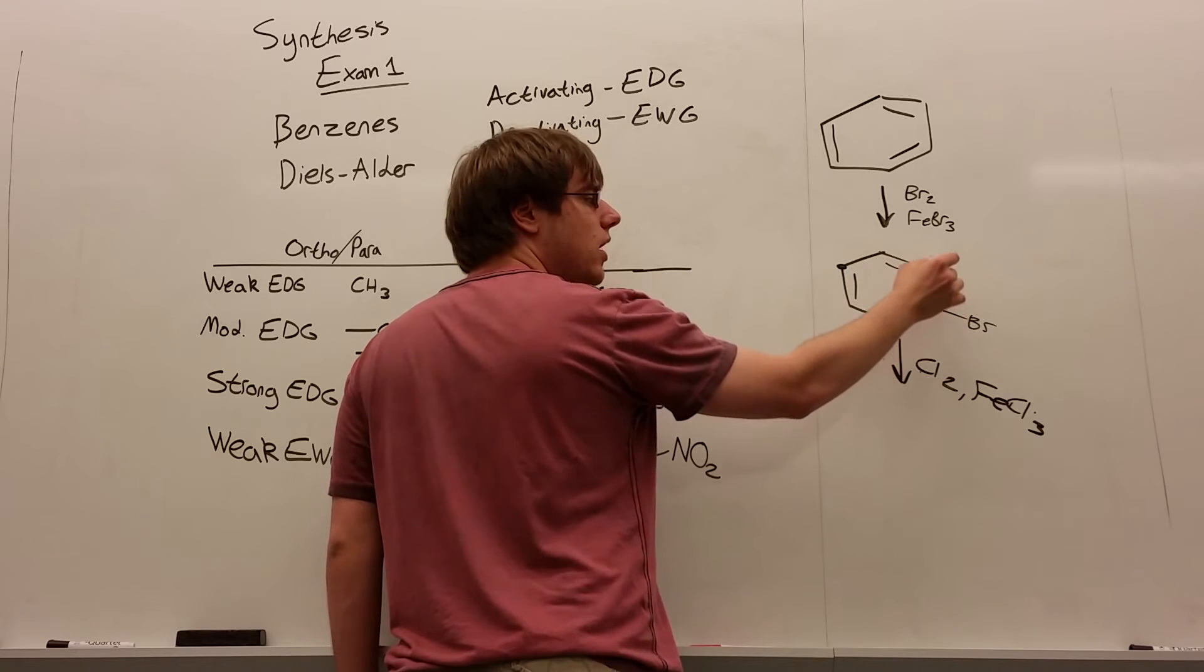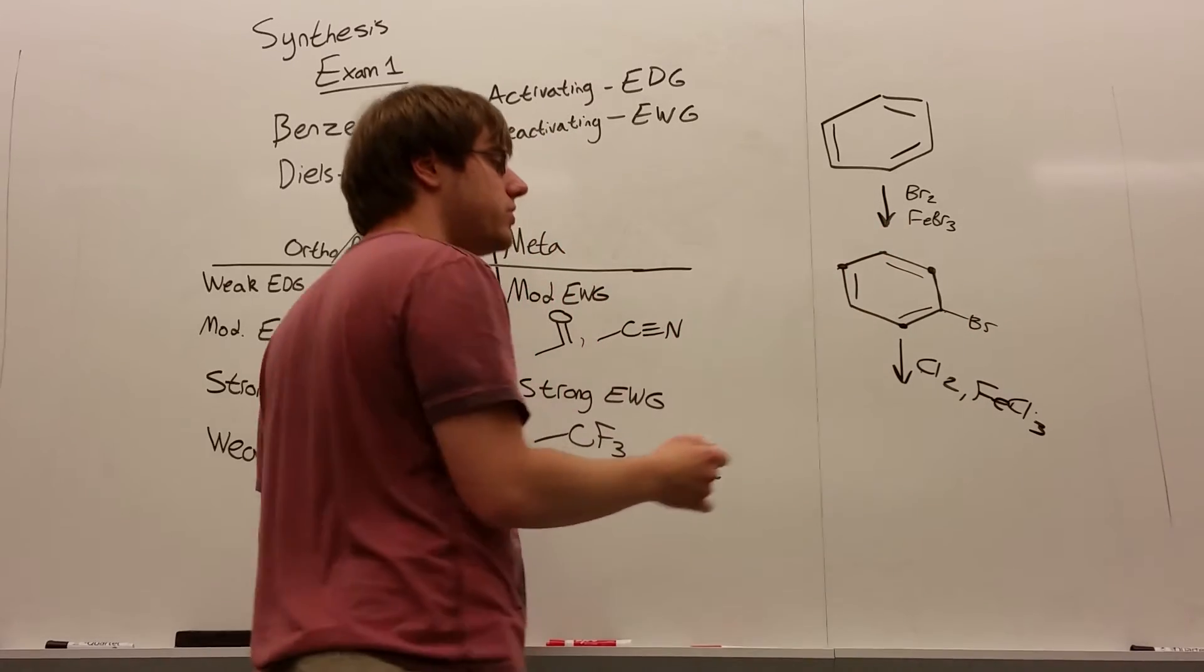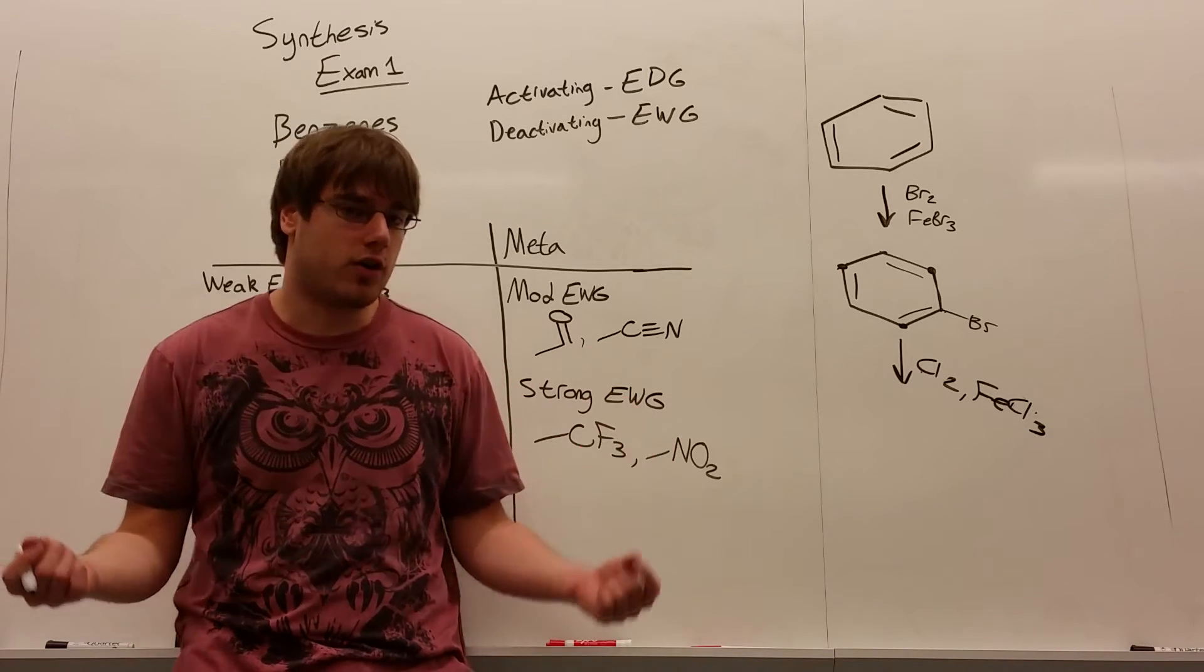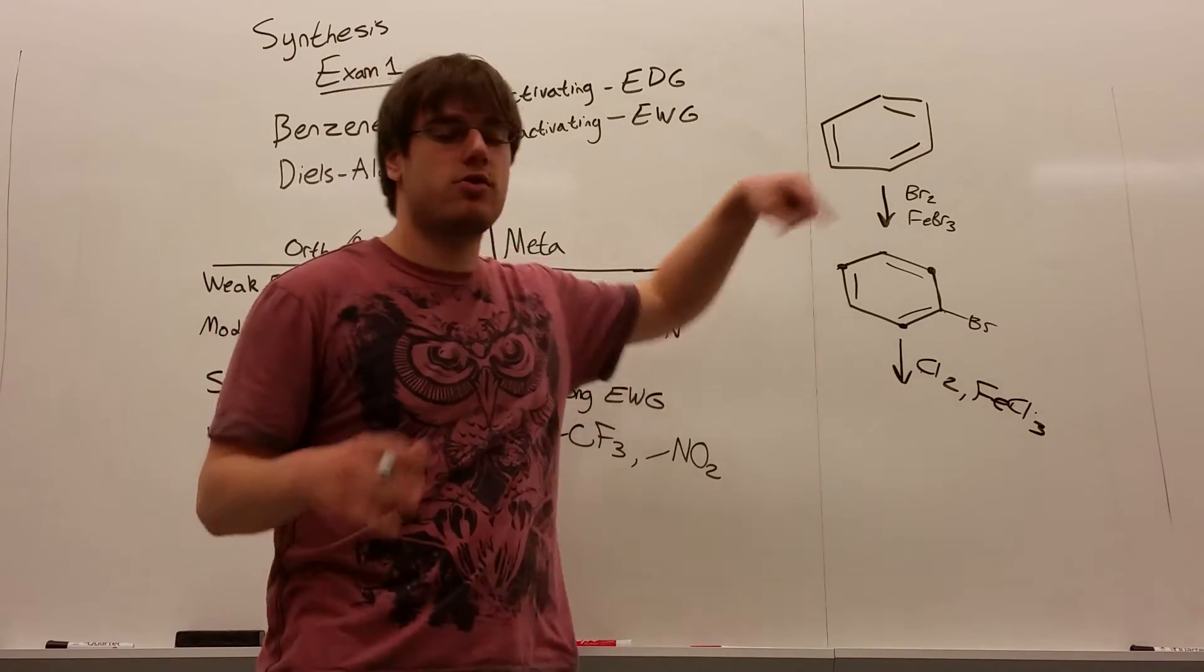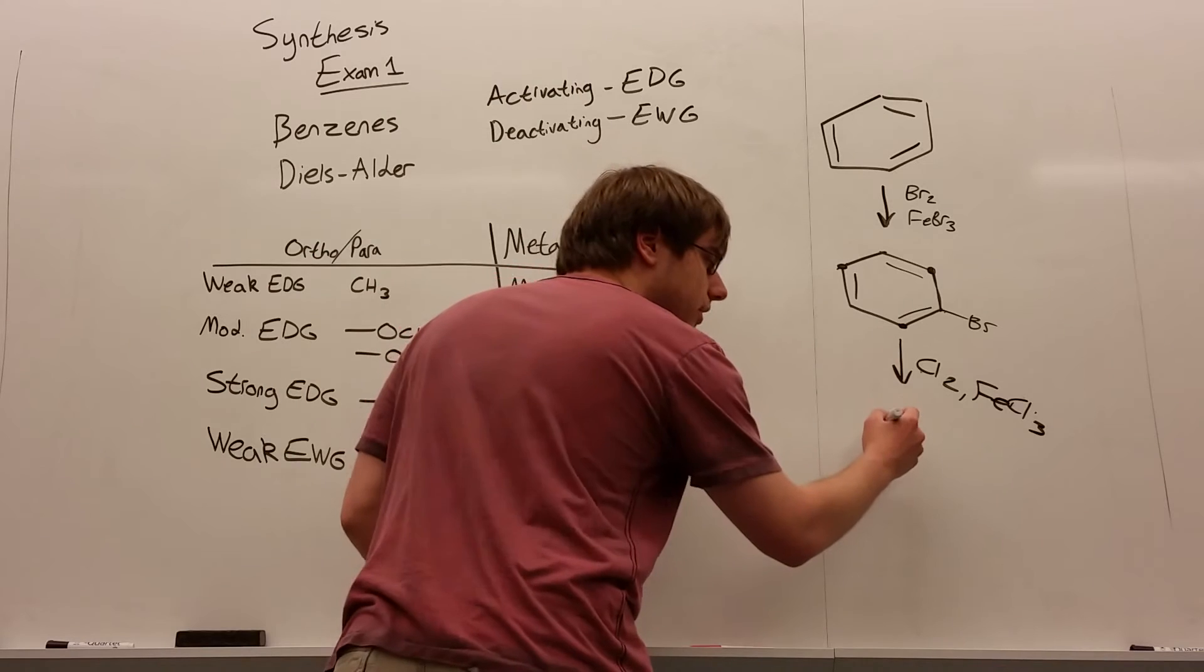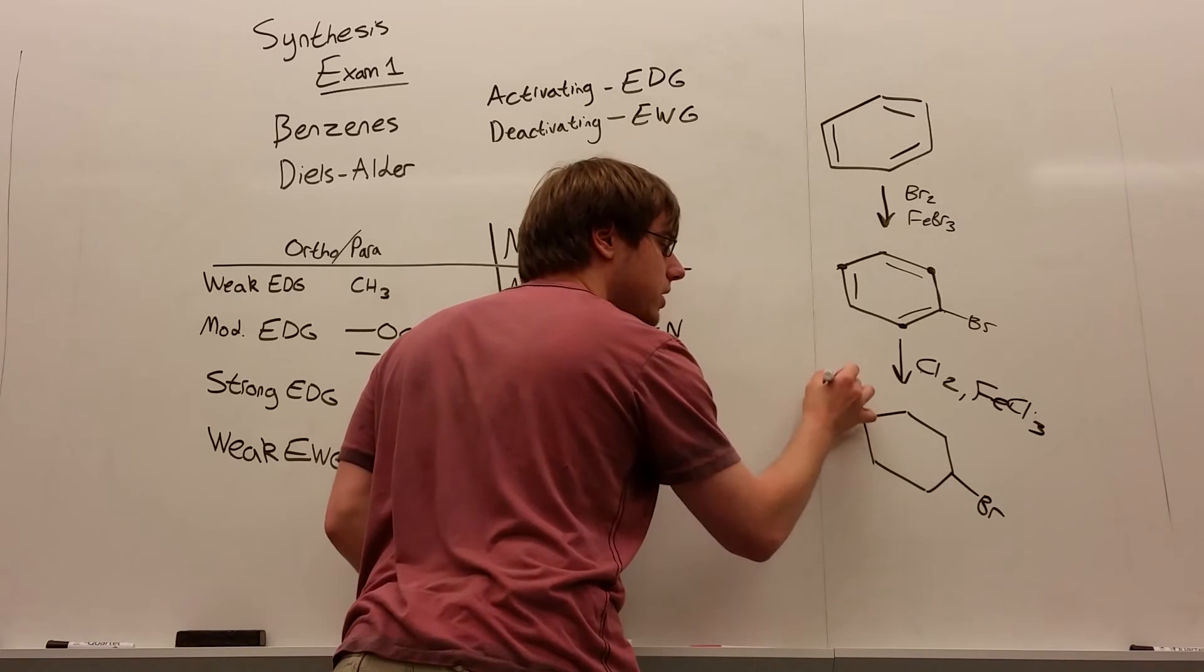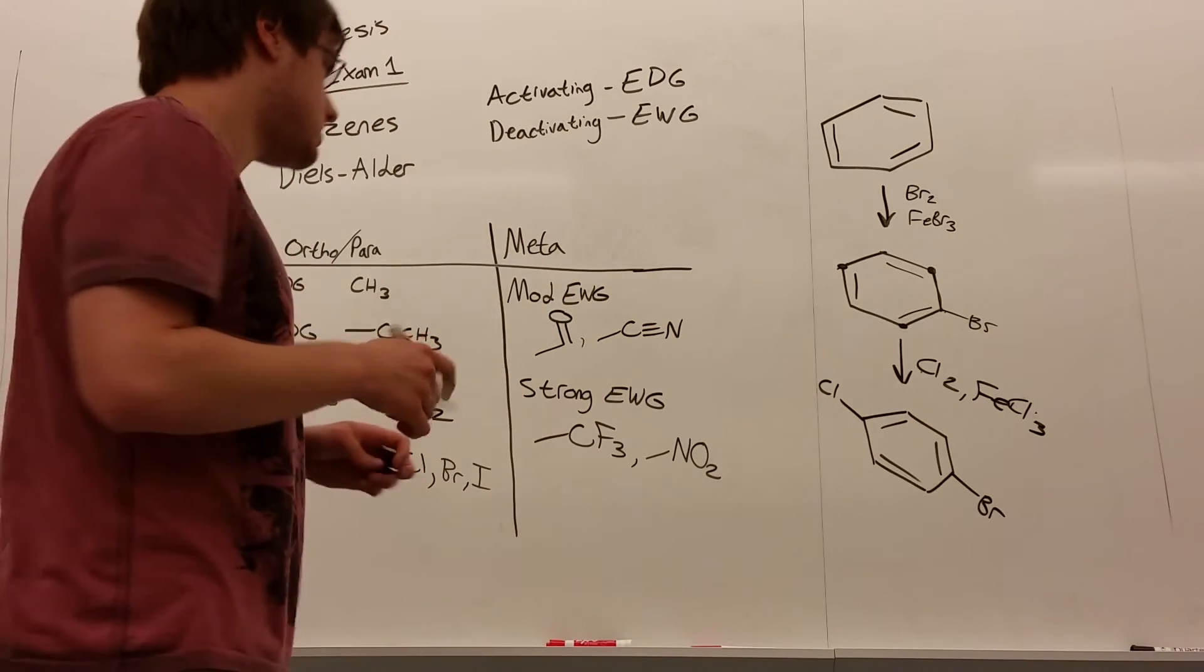So bromine being an ortho-para director means I would either add here, here, or here. A single bond away on the benzene, that is the ortho position. And then 1, 2, 3, 4, the 1, 4 position is the para position. Now, if you ever have both the ortho and the para positions available, you always add to the para position first because it is the more stable position of the two. By having the two groups further apart, there's less steric hindrance than having them right next to each other where they could bump into each other. And so the final product of this set of reactions would be bromine in the bottom right corner and chlorine being added four carbons away on the benzene. Okay? So it was the bromine that did the directing.